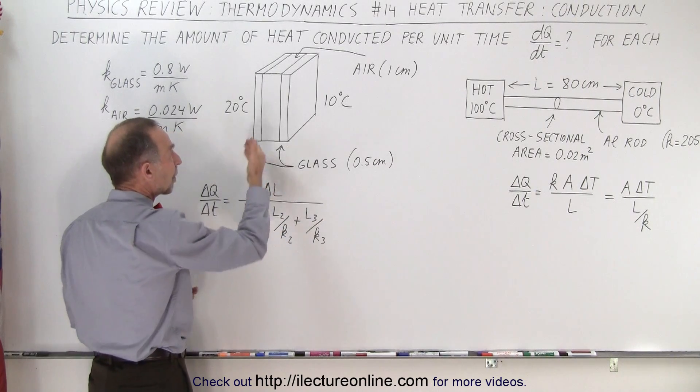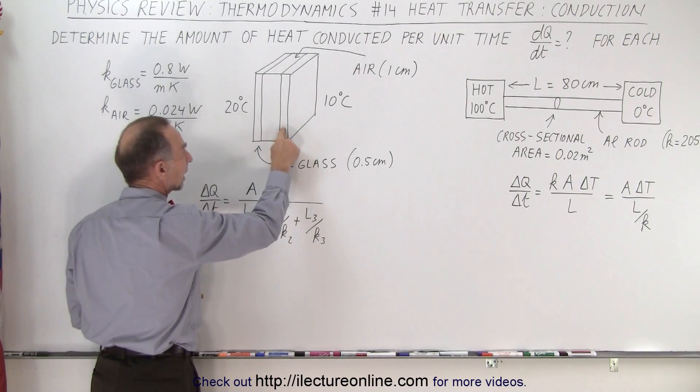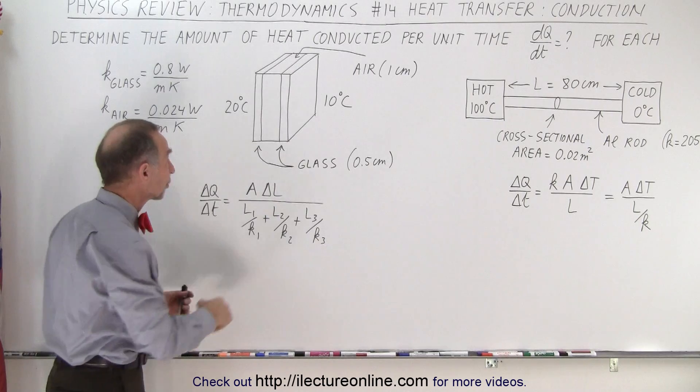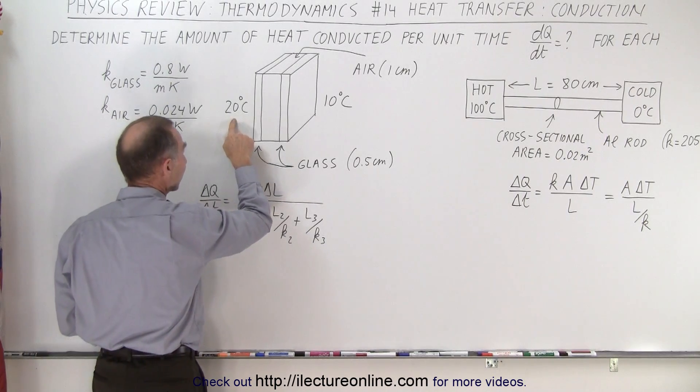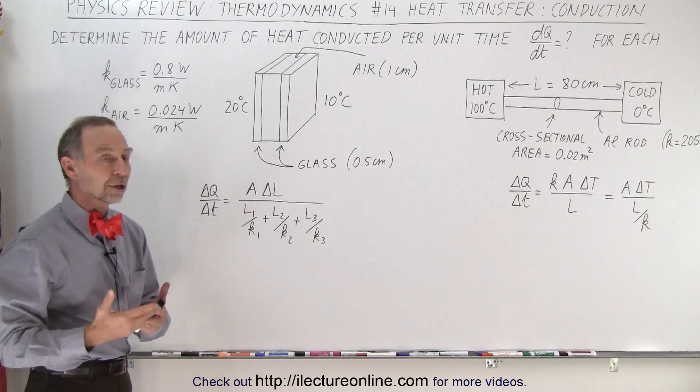In this case we're representing a double pane window where you have a glass on one side, a glass on the other side and air in between. The difference in the temperature, the inside is 20 degrees celsius, the outside is 10 degrees celsius, and we need to find the heat conducted through that.